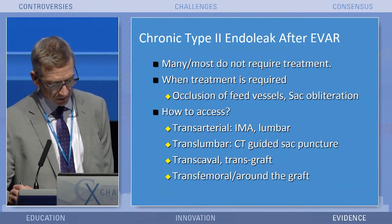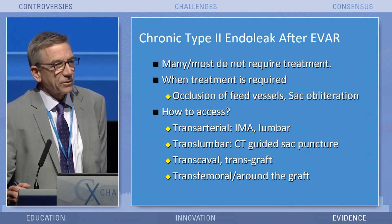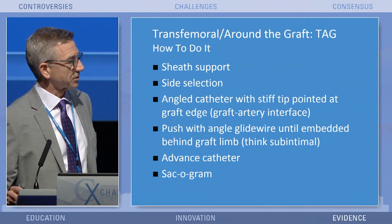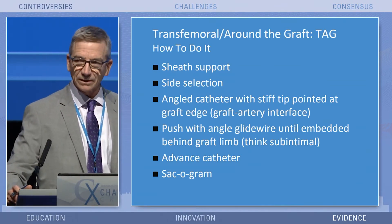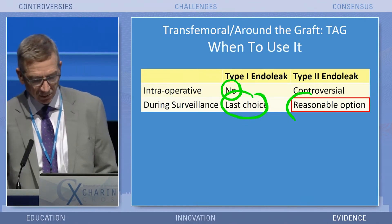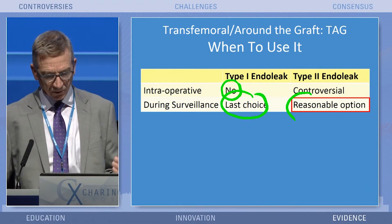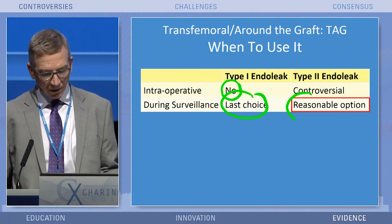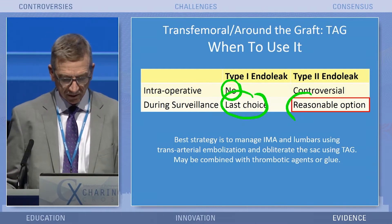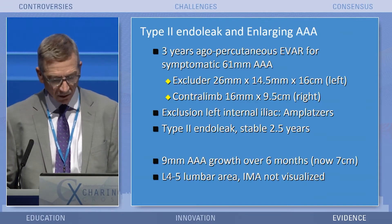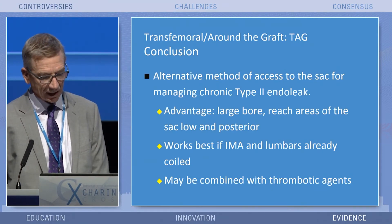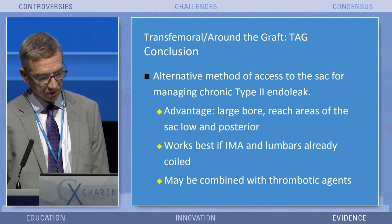We do typically two or three cases a year of a transfemoral approach — it's just another way to get into the sac. The translumbar approach seems to be extraordinarily safe, but empirically the idea of not poking a hole in the aorta is appealing. The around-the-graft approach to treat a type 2 endoleak proven to need treatment under surveillance is another option. Our strategy is to treat IMA and lumbars using transarterial, then if the sac still needs obliteration, proceed with a trans-graft or perigraft approach.